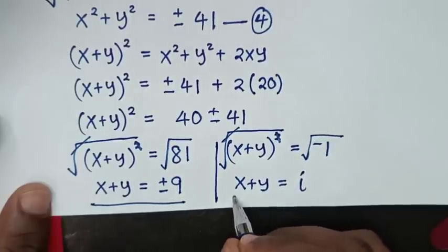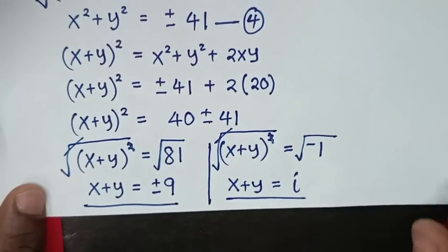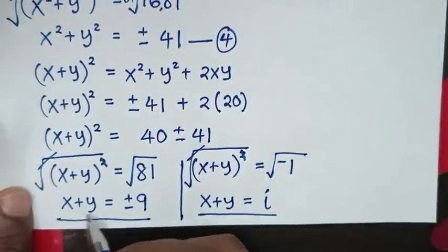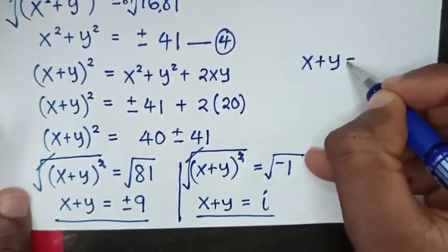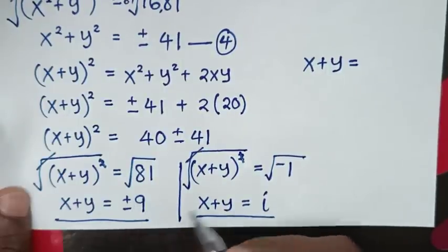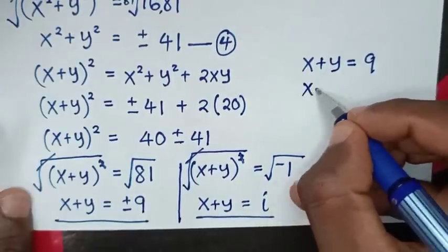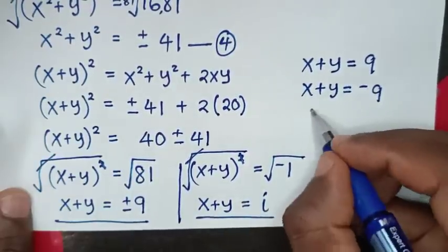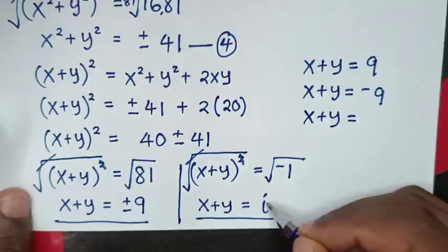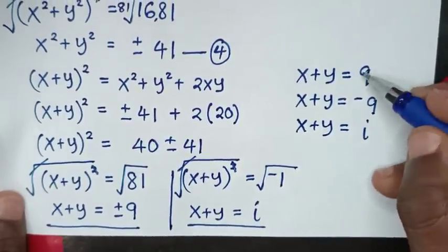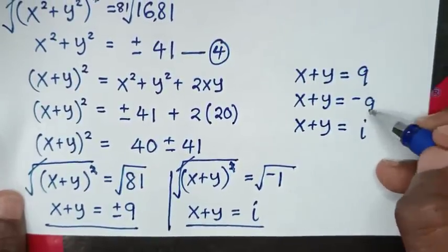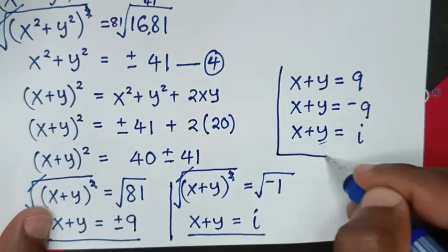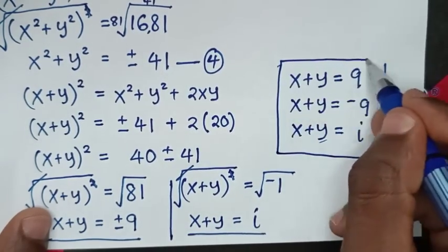So x plus y equals i, which is a complex solution. Therefore, the conclusion from our problem: the first value of x plus y is equal to positive 9, the second value of x plus y is equal to negative 9, and the third value of x plus y is equal to i. So we have two real solutions and one complex solution of x plus y. These are all our solutions to this problem.